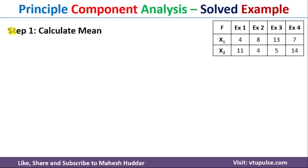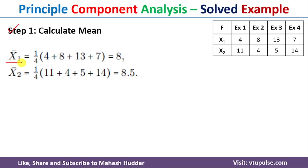The first step is to calculate the mean of the two features. x1 is the first feature and x2 is the second feature. The mean of x1, represented as x1-bar, is the sum of all four values divided by 4, which equals 8. Similarly, the mean of x2, x2-bar, is the sum of all four feature values divided by 4, which equals 8.5.